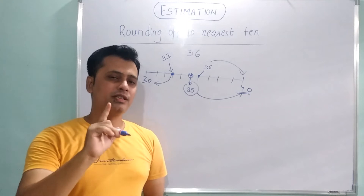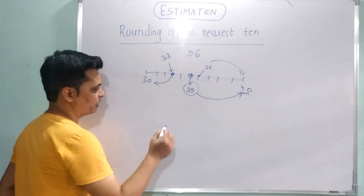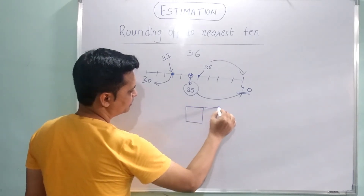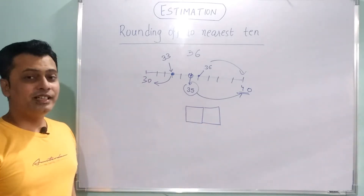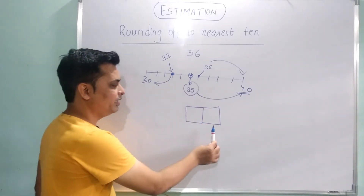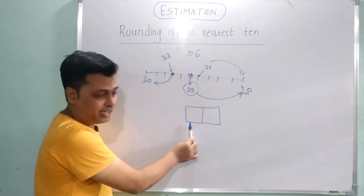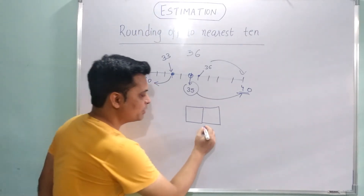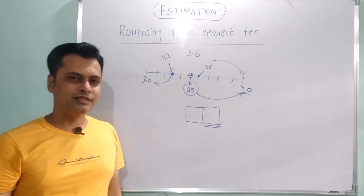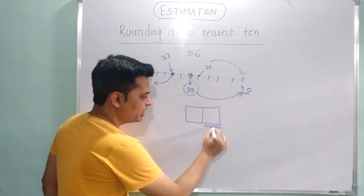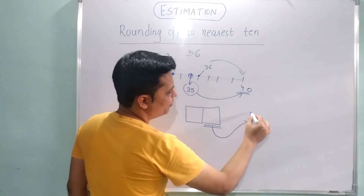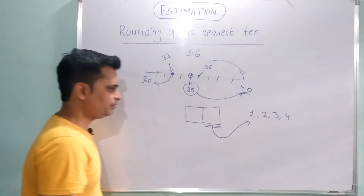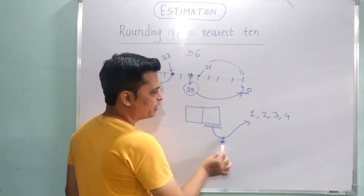So if you have to find the nearest 10, how do you find it? Look at the two digit places: the tens place and the ones place. If you have to find the nearest 10, you need to check the digit at the ones place — whether it is 1, 2, 3, or 4.